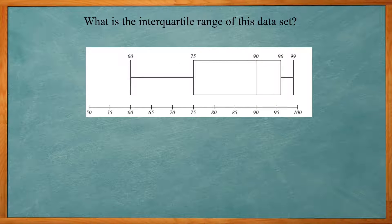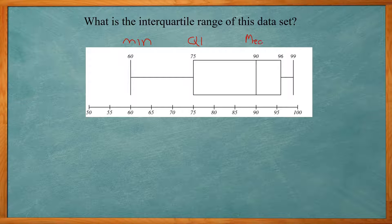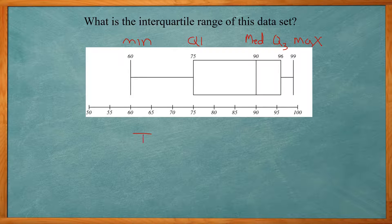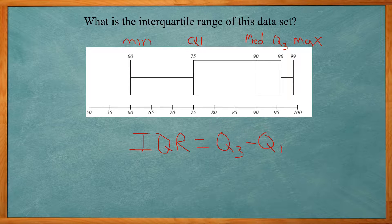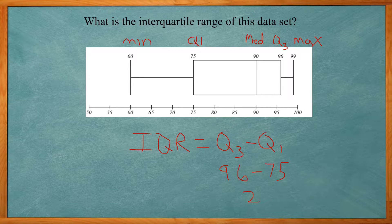This problem, it reads, what is the interquartile range of this data set? So remember, this is a box plot. Where the 60 is, that's our minimum value. Where the 75 is, that's our Q1. 90 is the median. 96 is Q3. And the 99 is our max value. And the interquartile range, the Q3 minus Q1, which will be 96 minus 75, which gives us 21. So the interquartile range of this data set is 21.